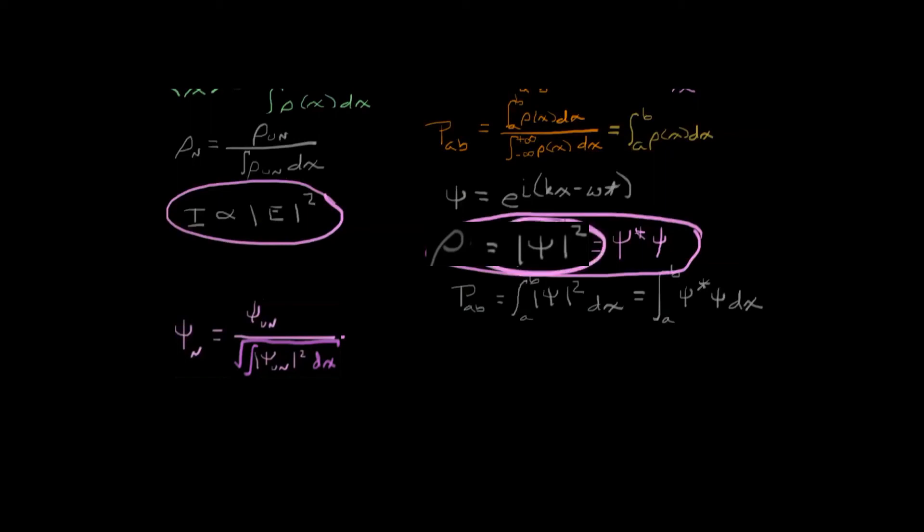And in this case, remember, this is assuming that this is a normalized wave function. And if we want to find the probability that some quantum acting particle is between a and b, we can simply take the integral of the magnitude of the wave function squared.